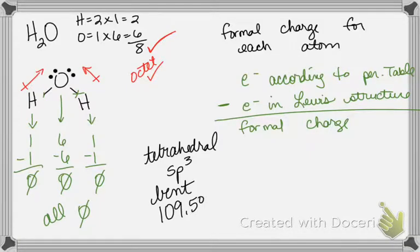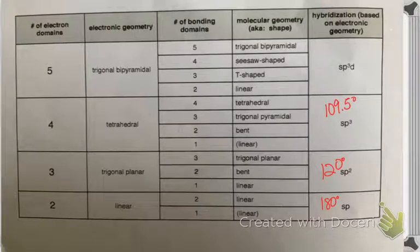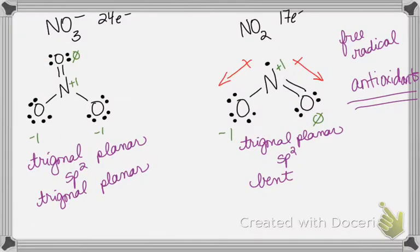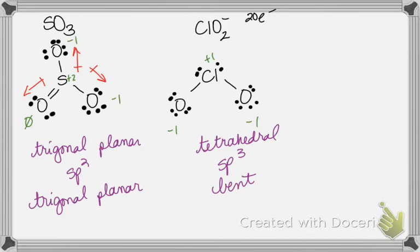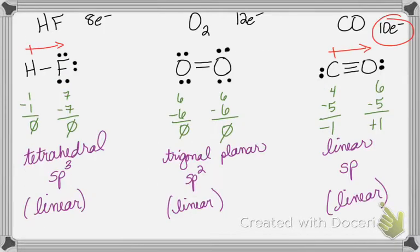When doing bond angle, you're looking at electronic geometry to determine that angle. Water has two sigma bonds and zero pi. HF does not have a bond angle because a bond angle is the angle between two bonds — like on water. HF only has one bond, so there's no other bond to reference. Same with oxygen — there's only one bonding area, nothing else to reference, so there's no bond angle. Same for carbon monoxide: when there are only two atoms, you don't write a bond angle.